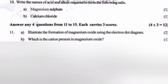Question 10: Write the names of acid and alkali required to form the following salts. A. Magnesium sulfate. B. Calcium chloride. Answer: A. Mg(OH)2 and H2SO4. B. Ca(OH)2 and HCl.